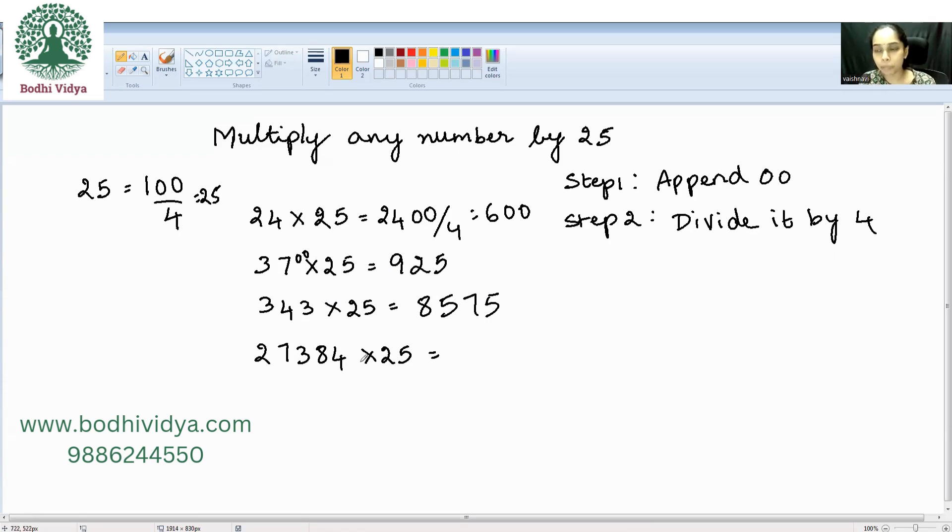So this is a much bigger number. Try to visualize 2 zeros here mentally, or if you want you can write it. So 6 fours are 24. 3 remainder, 33. Then 8 fours are 32, 1 remainder, 18. 4 fours are 16, 2 remainder, 24. 6 fours are 24. 0, 0.